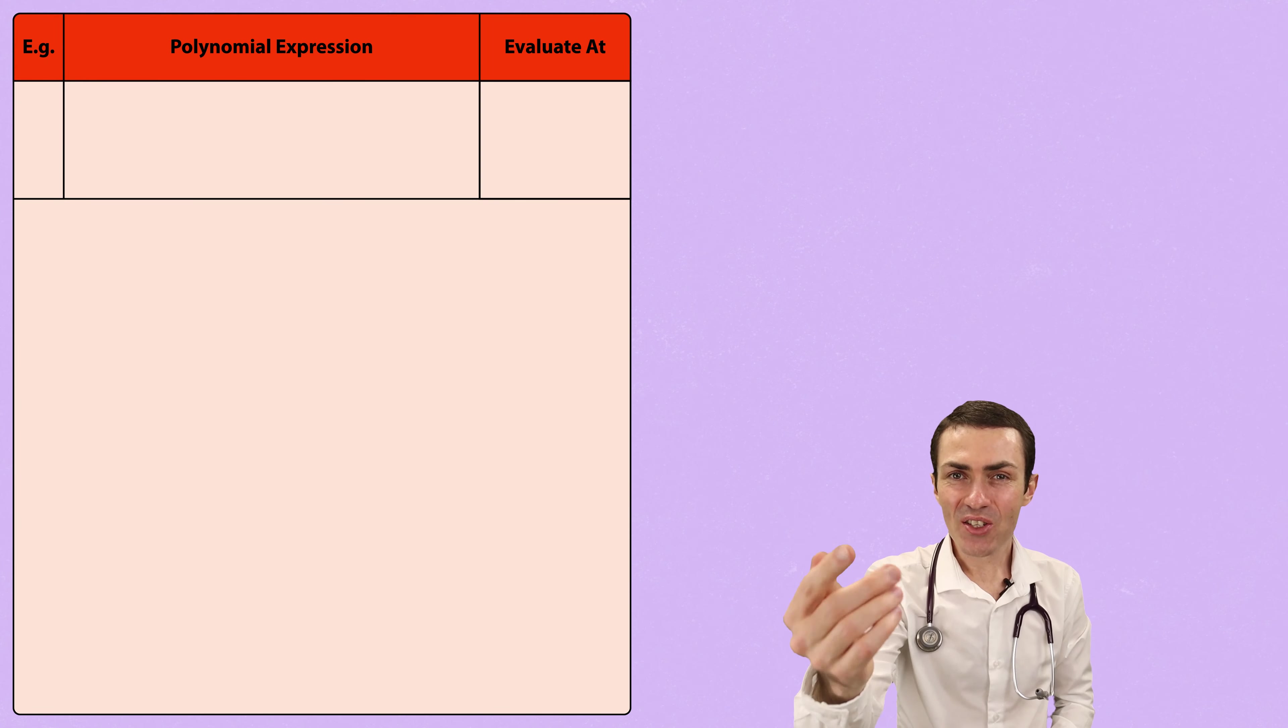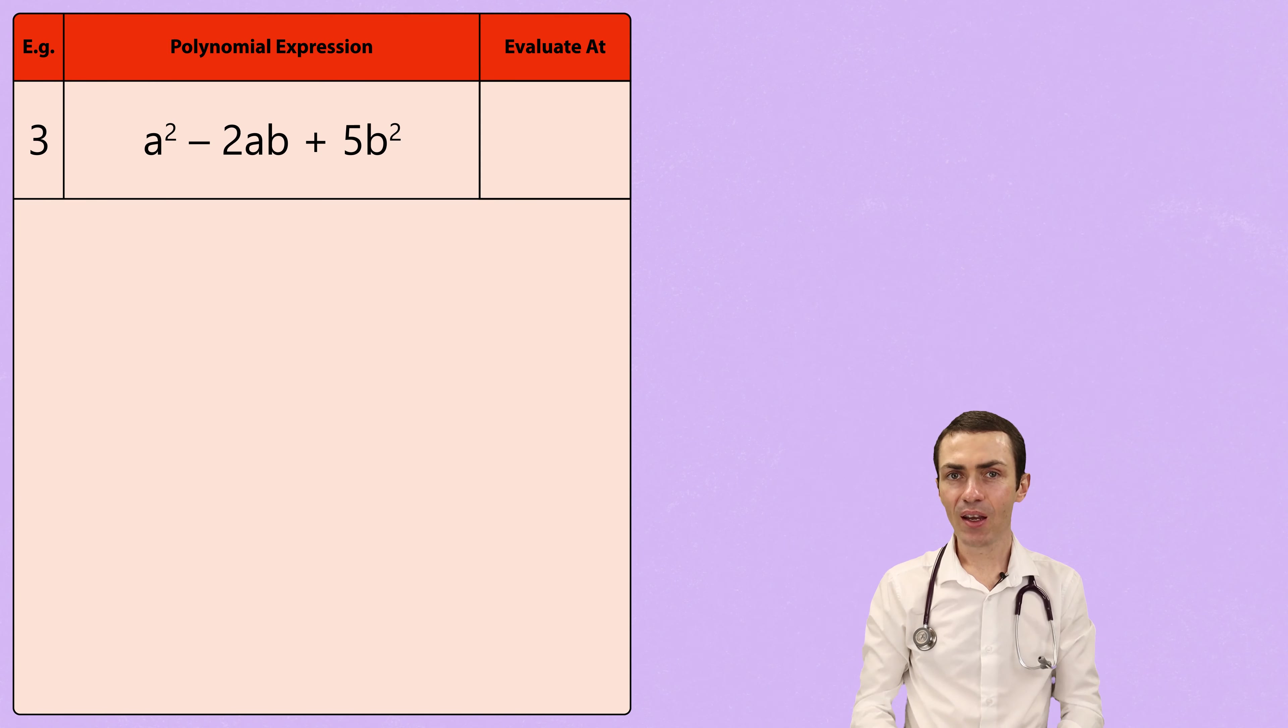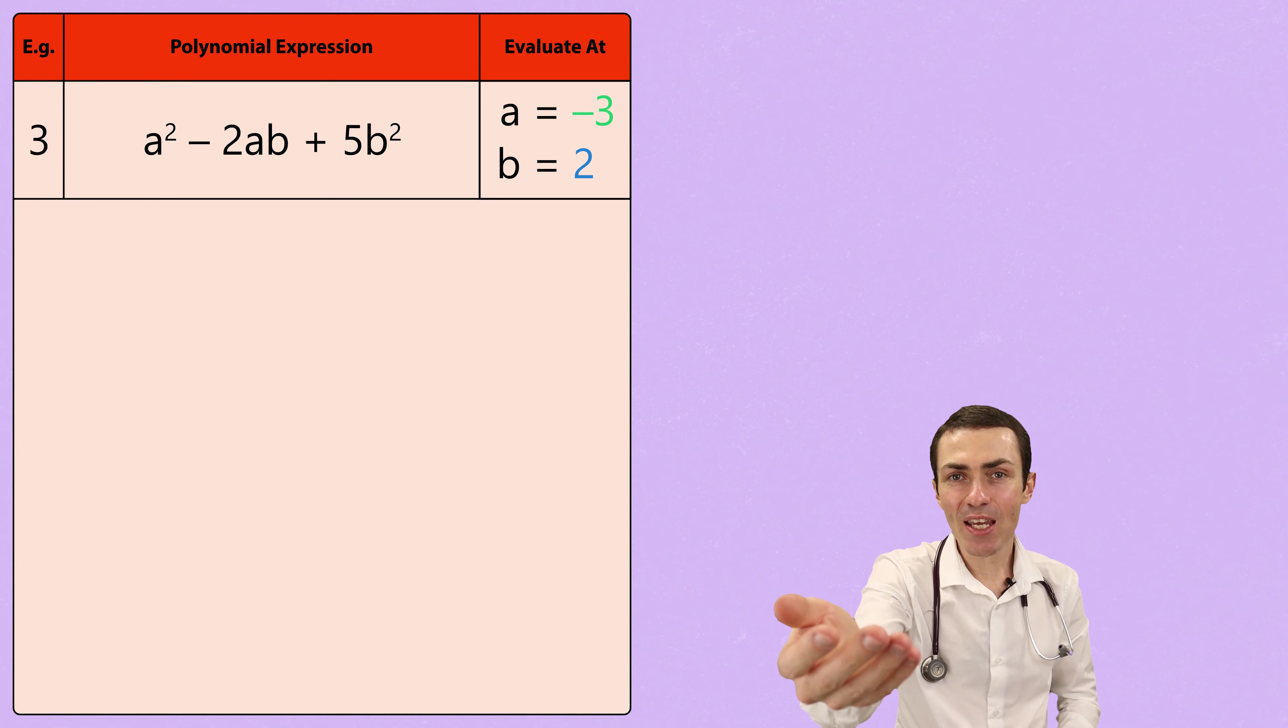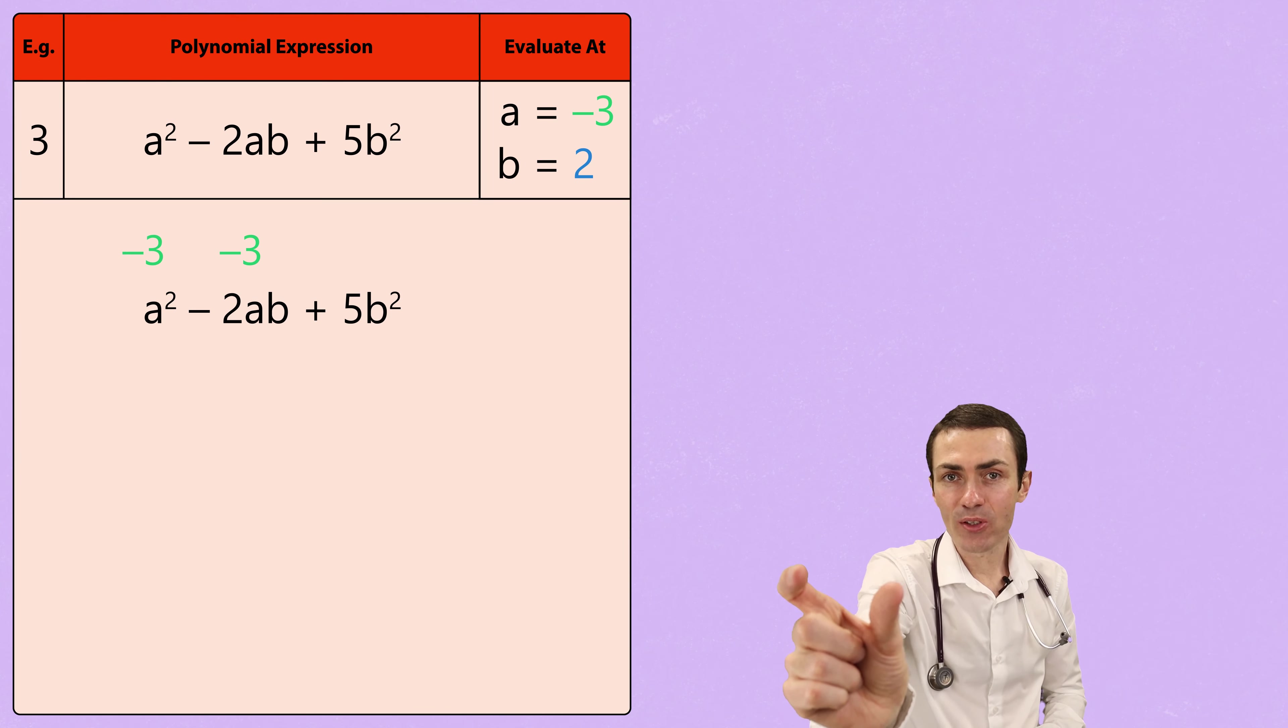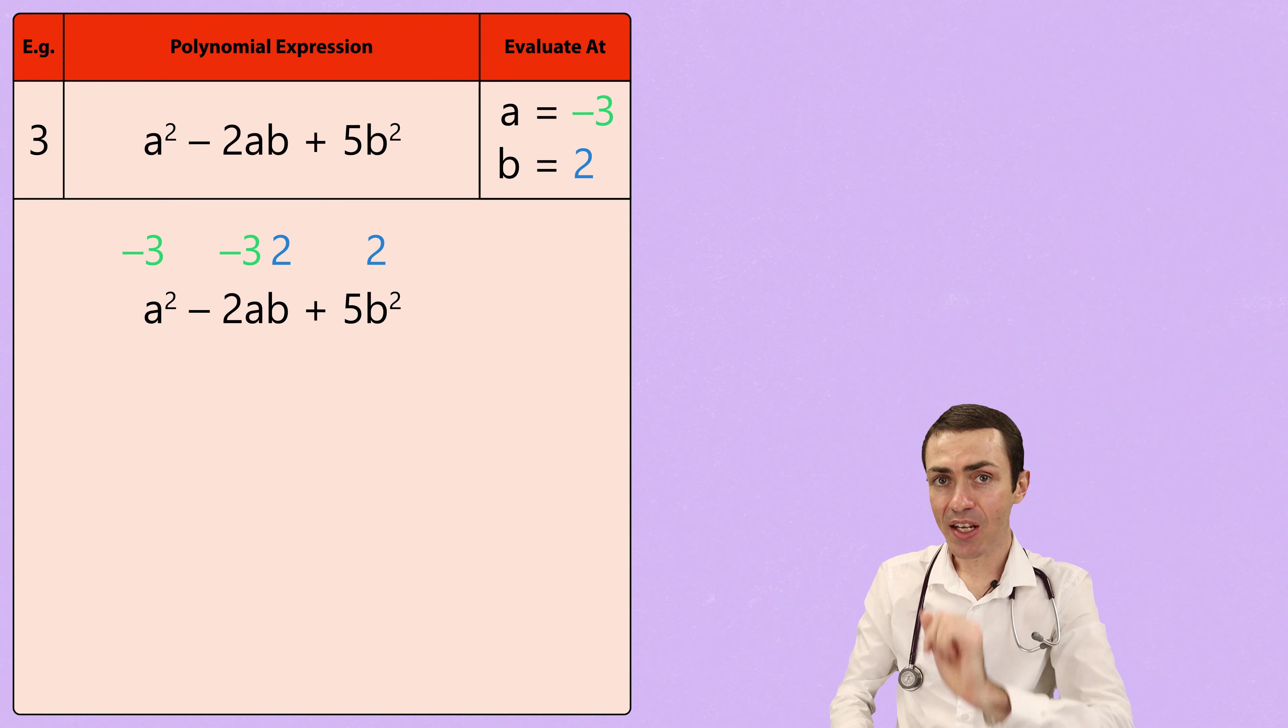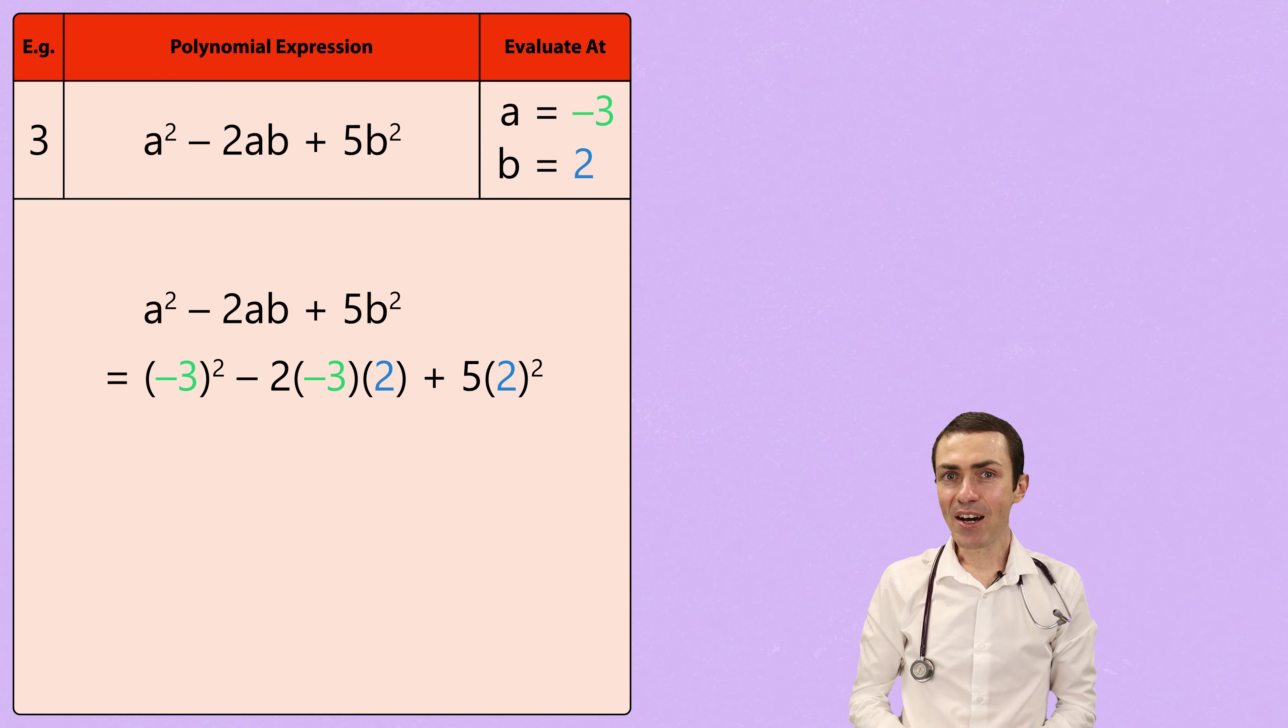What if we are asked to evaluate a polynomial with two or more variables? Well, that is not a problem because we simply substitute those variables with given values. For example, if we are given a squared minus 2ab plus 5b squared at a equals negative 3 and b equals 2. Wherever you see an a, simply replace it with negative 3. And wherever you see a b, simply replace it with 2.